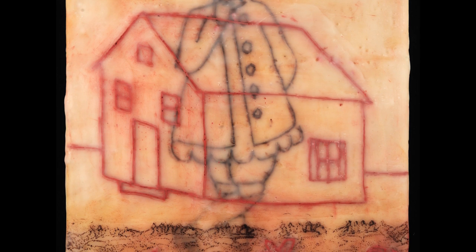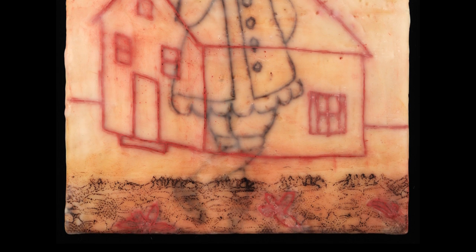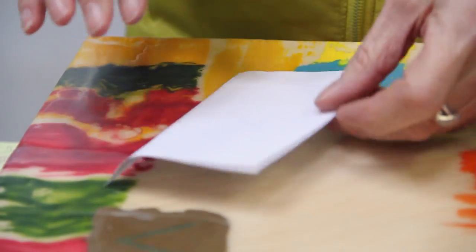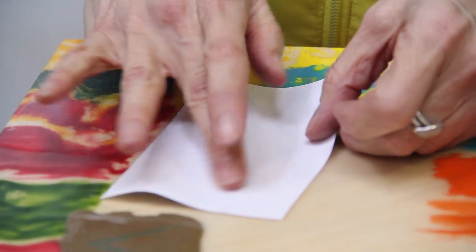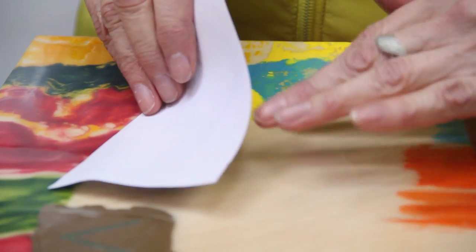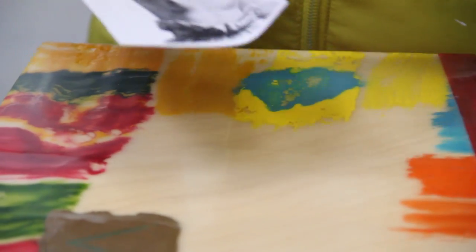They work the best if the surface is flat, so if you have a lot of texture, it's not going to transfer. When you think about it, because we are going to be burnishing something in. So if there is an image here and there are mountains and valleys, it's not going to work.